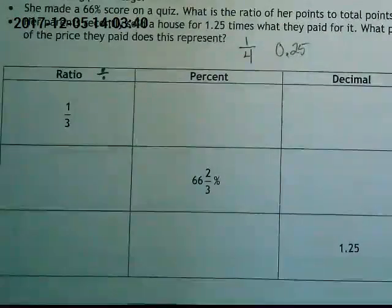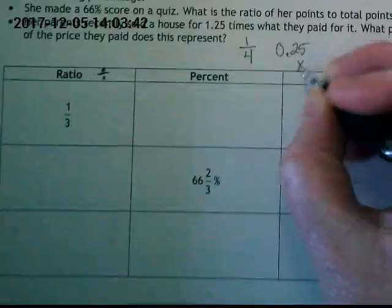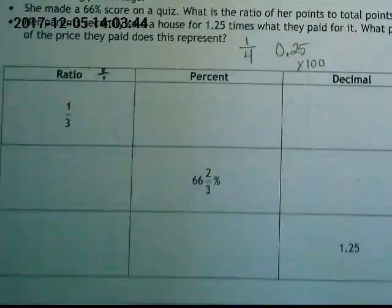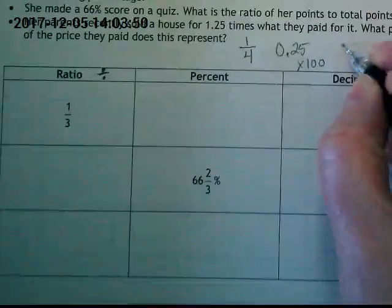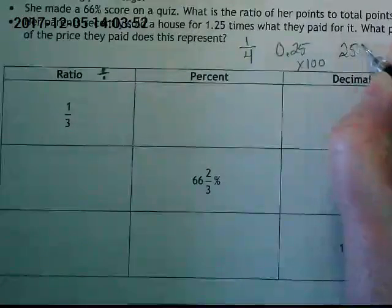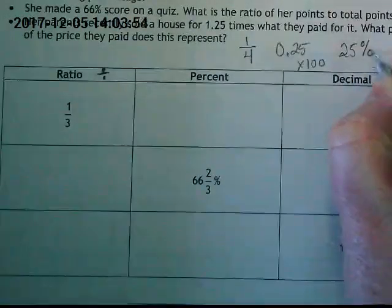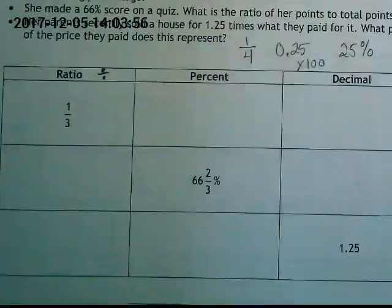To turn it into a percent, we want to multiply that decimal by 100. So do times 100. Your calculator won't put the percent symbol, but because we multiplied by 100, I want you to put the percent symbol.